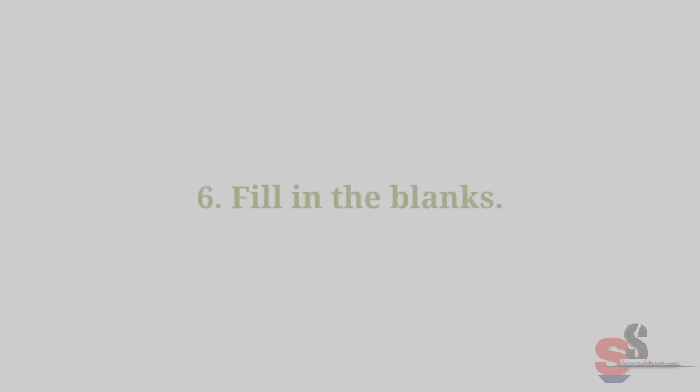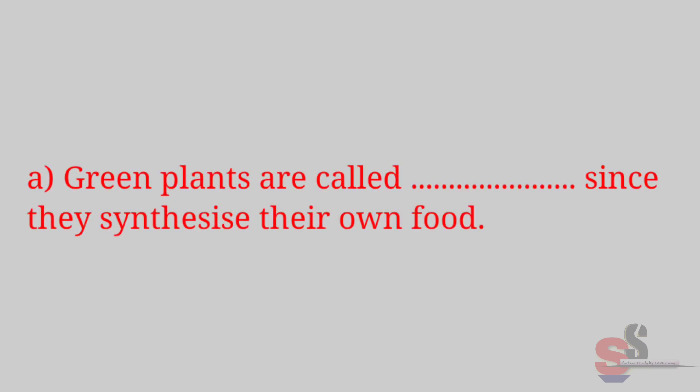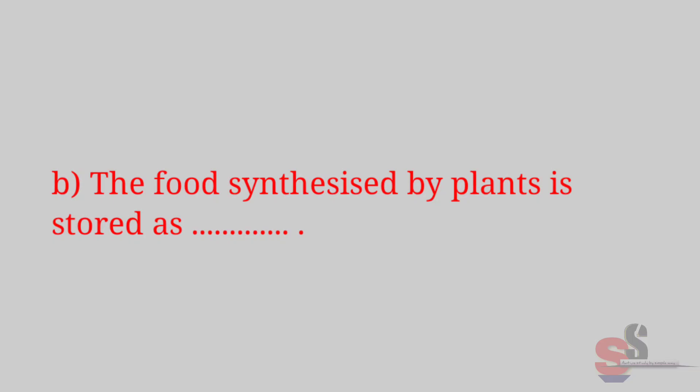Question 6: Fill in the blanks. (a) Green plants are called [blank] since they synthesize their own food. Right answer is autotrophs. (b) The food synthesized by plants is stored as [blank]. Right answer is starch.